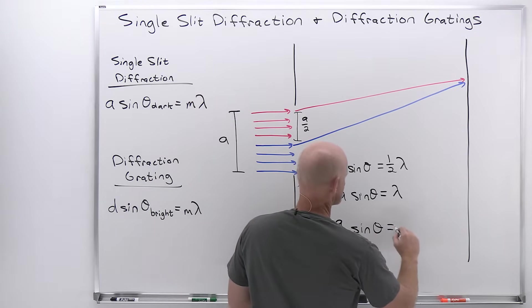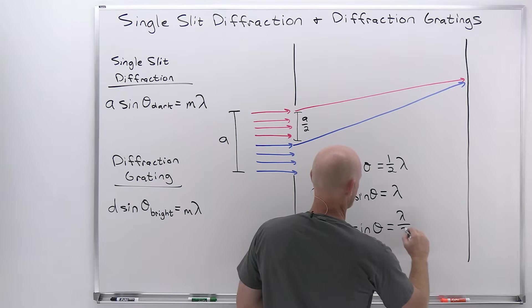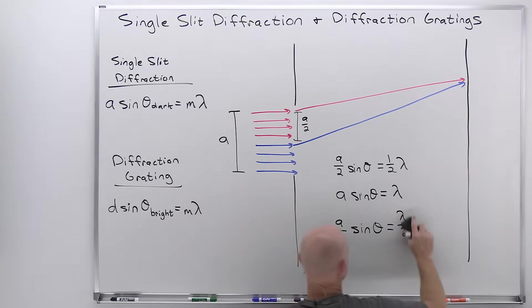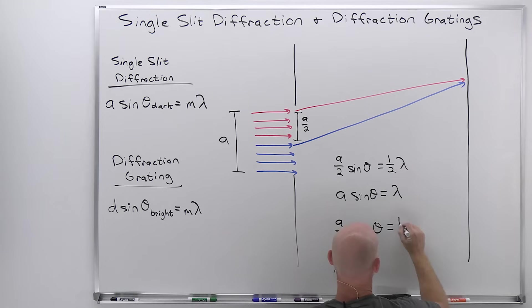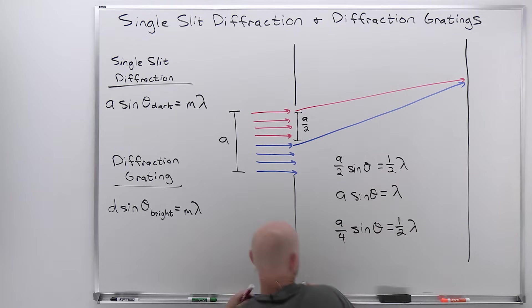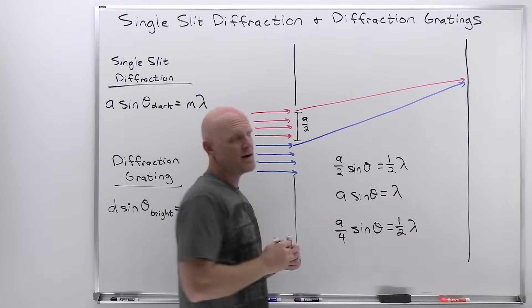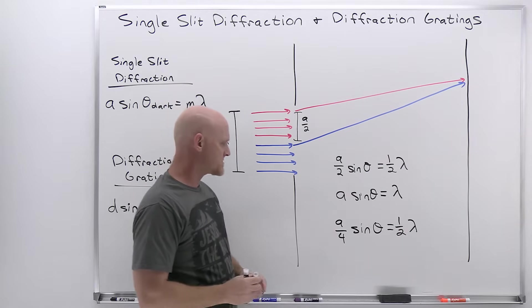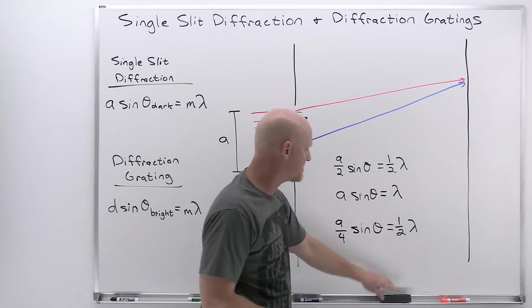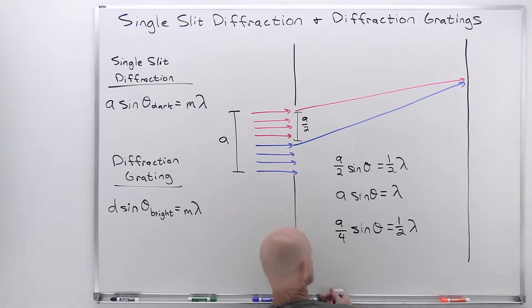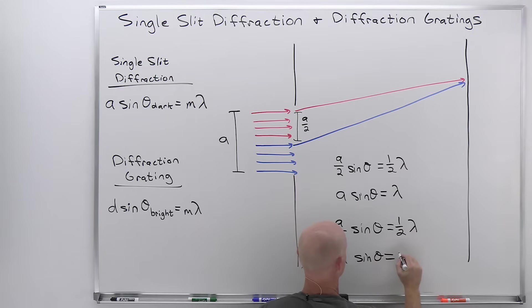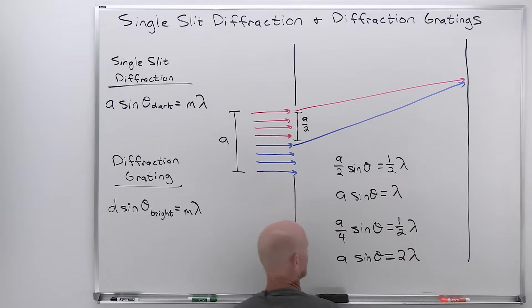As long as that equals one half lambda, that is the condition for destructive interference. Multiplying both sides by 4, we get A sine theta equals 2 lambda.